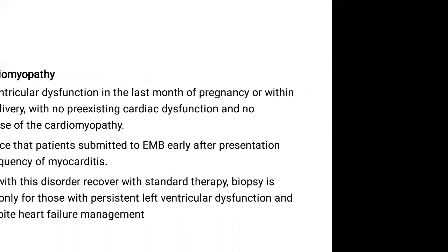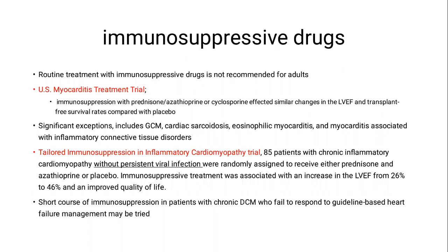Treatment: immunosuppressive drugs — routine use is not necessary. In the U.S. Myocarditis Treatment Trial, which randomized patients to either prednisone plus azathioprine or cyclosporine versus placebo, there was no effect on ejection fraction or transplant-free survival. This is a negative trial. However, a significant exception for use of immunosuppressive drugs is giant cell myocarditis, sarcoidosis, or eosinophilic myocarditis. In another trial — the tailored immunosuppression in inflammatory cardiomyopathy trial — a small number of patients without persistent viral infection were randomized to receive either prednisone, azathioprine, or placebo. In this trial, there was marked improvement in ejection fraction and improved quality of life. This means ongoing trials regarding the use of immunosuppressive drugs are needed.